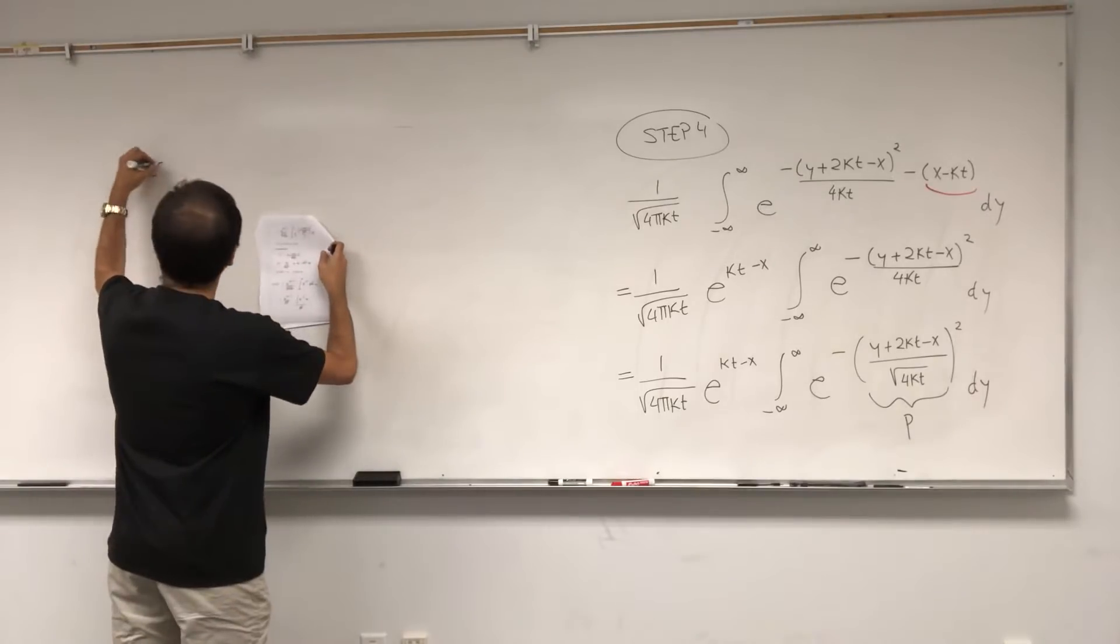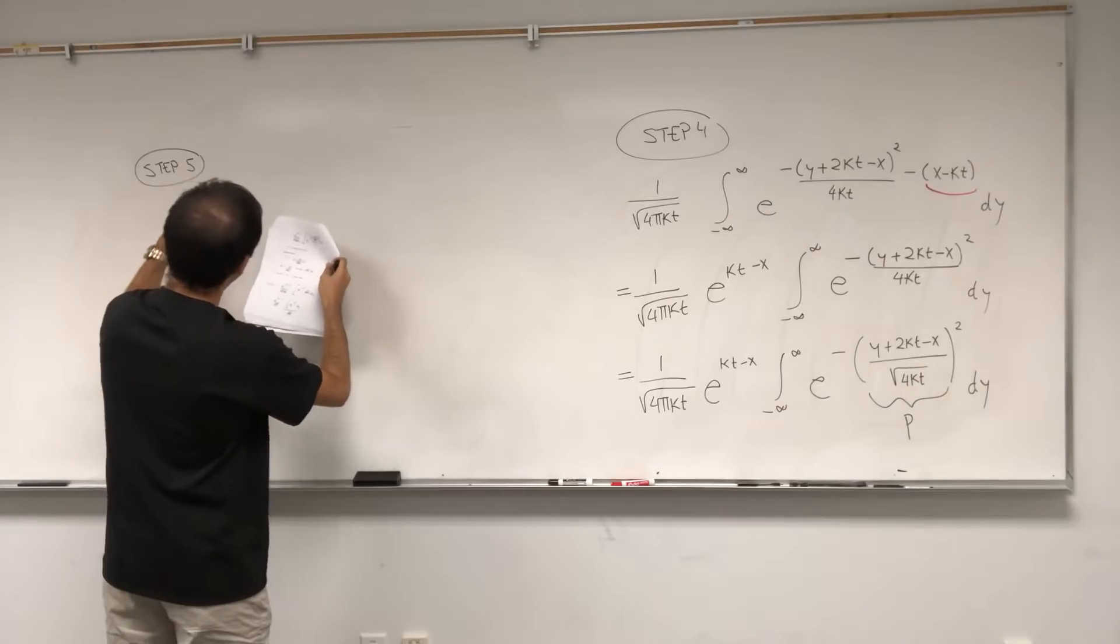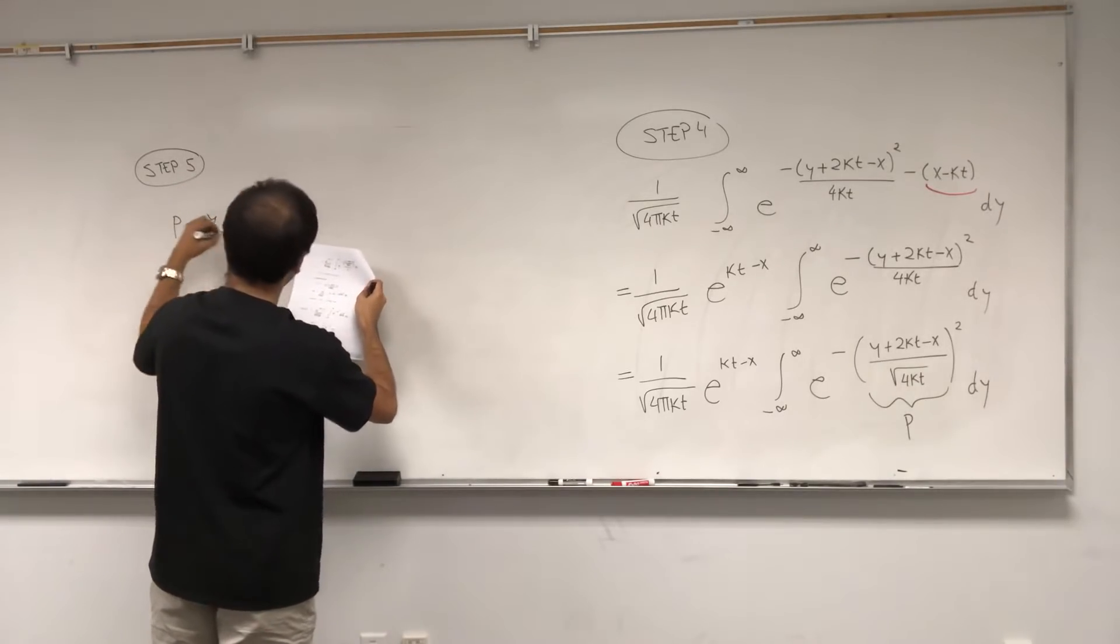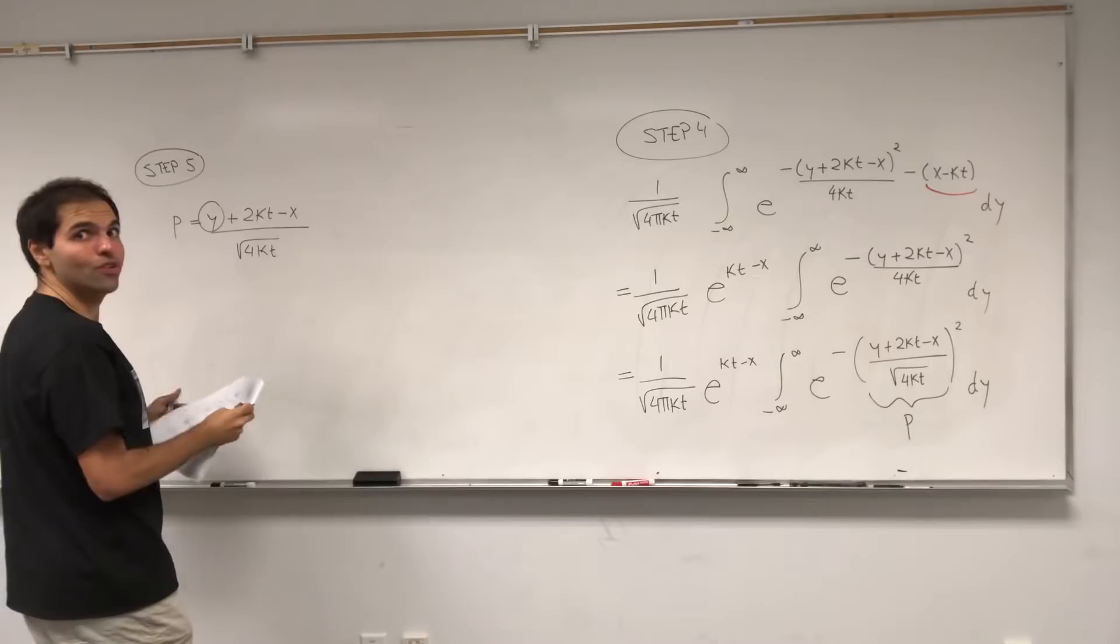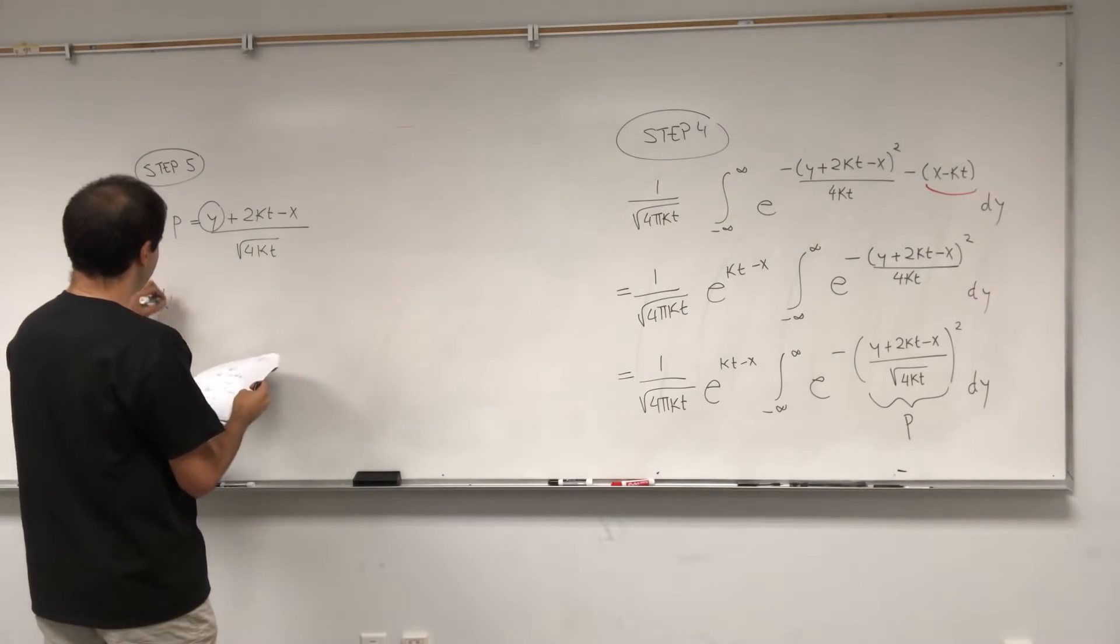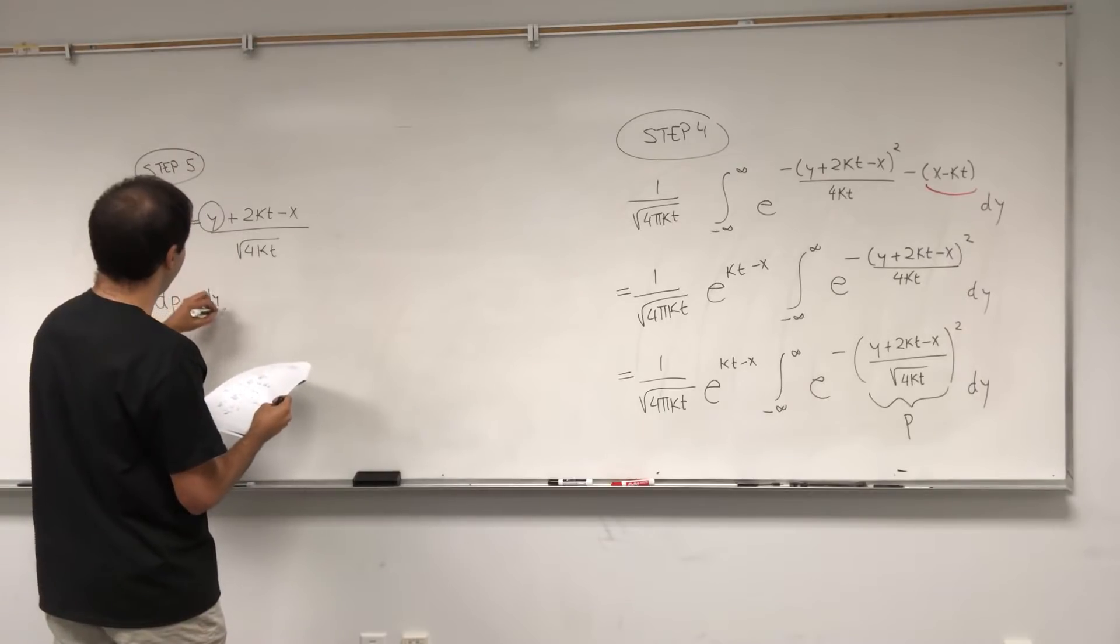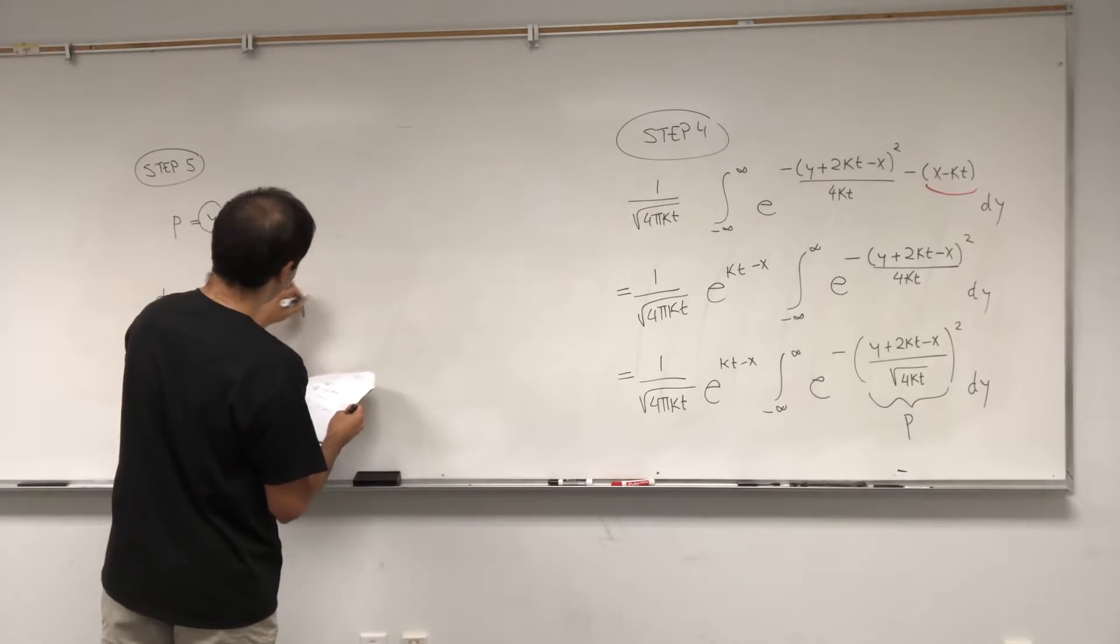By the way, the application will blow your mind, so don't just stop watching, watch till the end. So now let's step five. So let p be y plus 2kt minus x over square root of 4kt. Again, everything, just focus on the y. And then dp, you see this is constant, so it just becomes dy over square root of 4kt. So dy equals square root of 4kt dp.